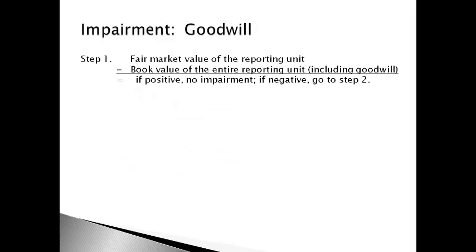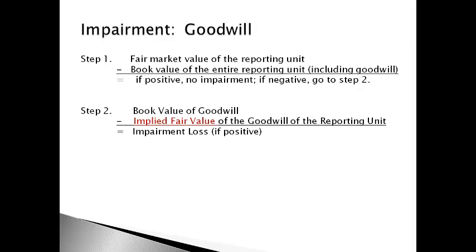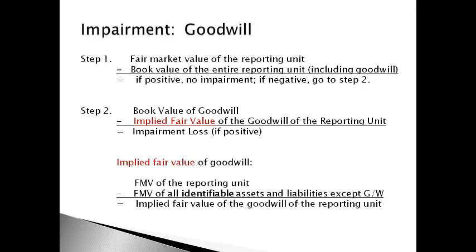A different method is used to test goodwill for impairment because goodwill is wrapped up within a specific reporting unit. Step 1 compares the fair market value of the reporting unit to the book value of all assets in the reporting unit, including goodwill. If fair market value is higher, there is no impairment. If fair market value is lower, the impairment loss must be computed in Step 2, which compares the book value of goodwill to the estimated implied fair market value of goodwill — computed by comparing the reporting unit's fair market value with the fair market value of all assets except goodwill. An impairment loss occurs when book value exceeds fair market value.